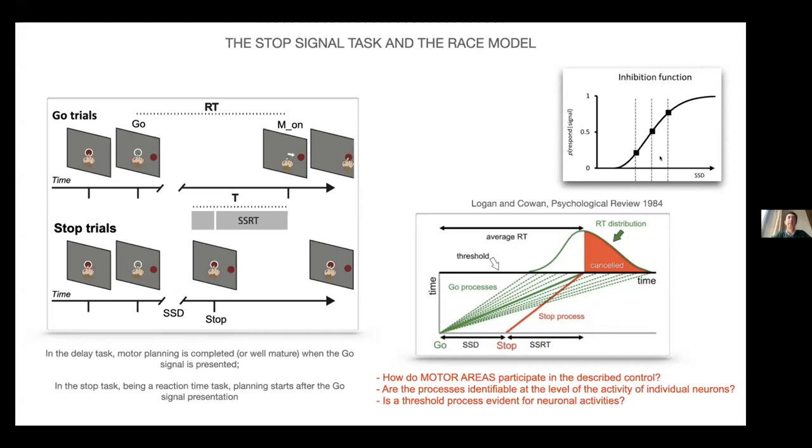The best model now to explain what is observed behaviorally is the so-called race model. This model predicts that the outcome of a stop trial is nothing more than the result of a competition between two processes that run toward a common threshold. The model, taking into account the variability of the reaction time and the observed probability of success, allows us to derive a measure of the response time to the stop signal, the so-called stop signal reaction time. This epoch is very important because it's where in time a modulation must occur to be causally related to the decision process.